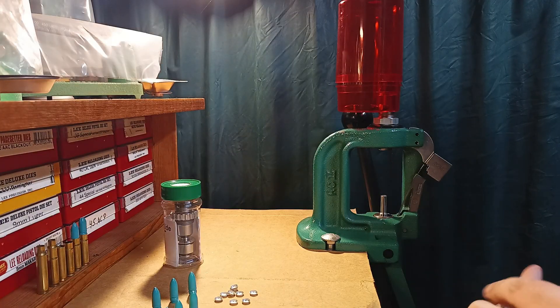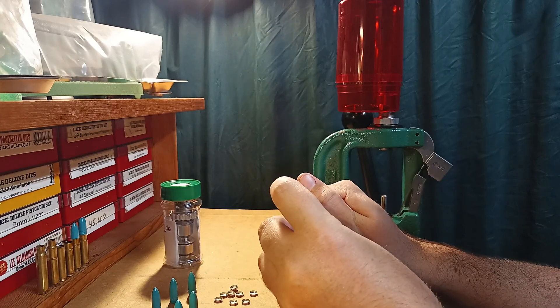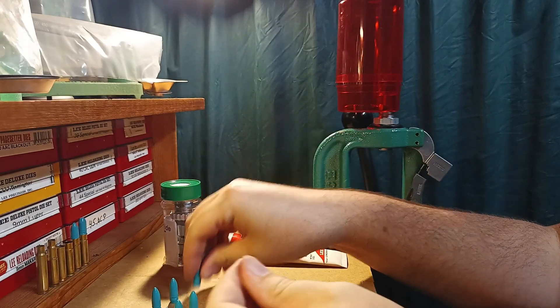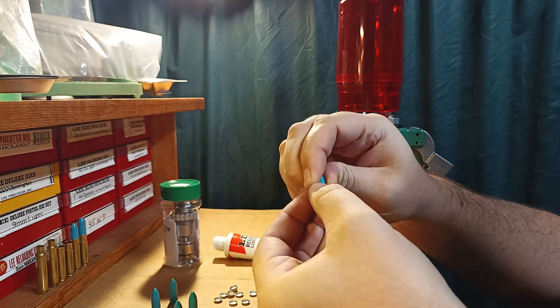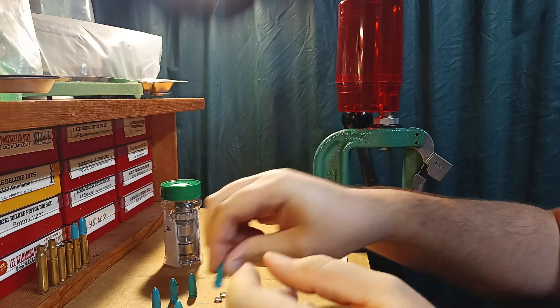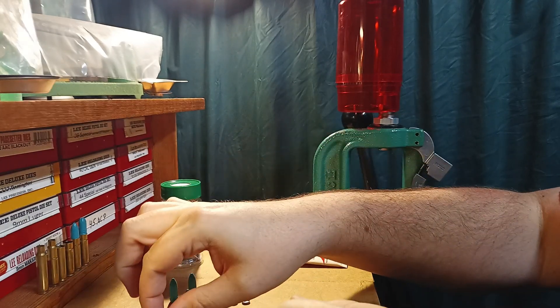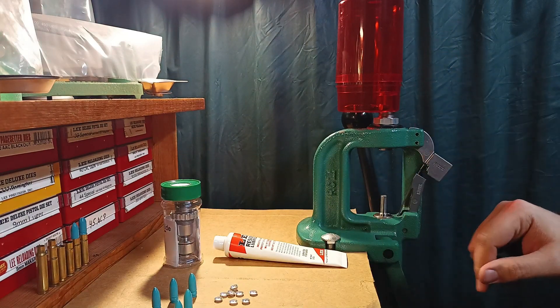Now to install the gas checks. What I like to do is apply a little bit more of that resizing lubricant. And then just wipe it on the bands here. Just on a few of them. That way it spreads out when you're sizing a bunch of these bullets. That way everything operates smoother.